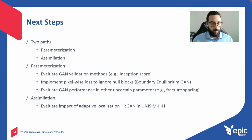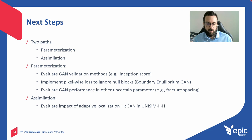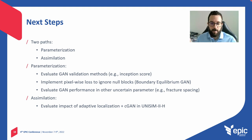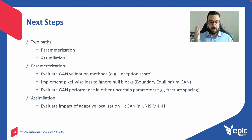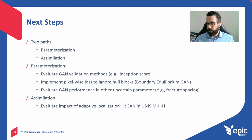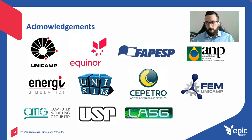The next steps will follow two paths: improve the parameterization and improve the assimilation. In the parameterization, we can improve the GAN validation methods, implement pixel-wise loss to ignore null blocks improving GAN training, and evaluate GAN performance on other uncertain parameters such as fracture spacing. In the assimilation, we can evaluate the impact of adaptive localization. Finally, when all these things are defined, we can apply history matching considering all uncertain parameters. We would like to thank our sponsors and attendees. Thank you.